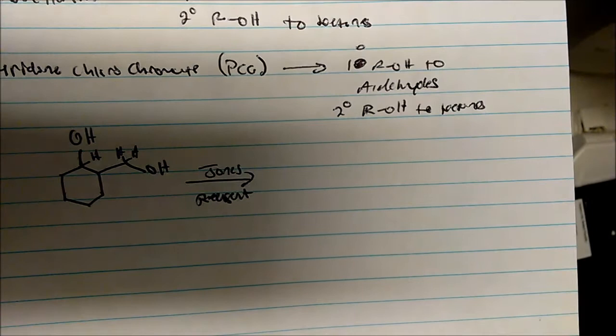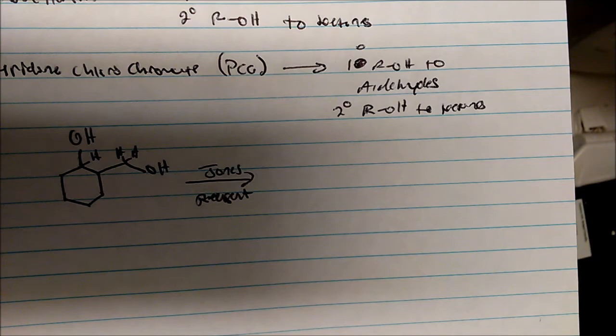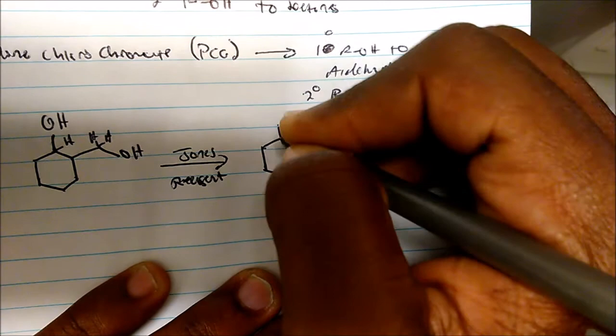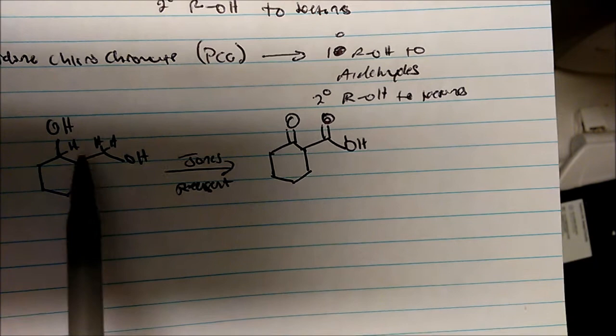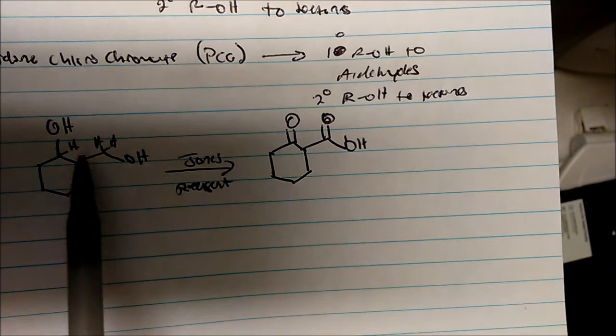So remember we said that Jones reagent reduces primary alcohols to carboxylic acids and secondary alcohols to ketones. So therefore, the product of this reaction will look something like this. Notice that I have my carboxylic acid from my primary alcohol and then my ketone from my secondary alcohol.